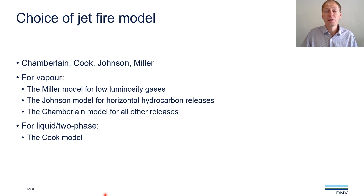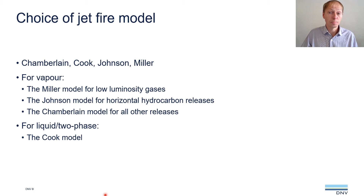Having compared model predictions with experimental data, we are now in a position to make recommendations for the choice of jet fire model when choosing between the cone models of Chamberlain, Cook, and Johnson and the new Miller model. For vapor jet fires, the recommendation is to use the Miller model when dealing with low-luminosity gases. In other cases, use the Johnson model for horizontal releases or the Chamberlain model otherwise. For two-phase and liquid jet fires, the recommendation is to always use the Cook model.